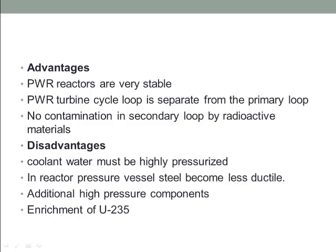Some disadvantages are also associated with the pressurized water reactor. The coolant water must be highly pressurized to remain liquid at high temperatures, requiring high-strength piping and heavy pressure vessels, which increases the construction cost. The higher pressure can also increase the consequences of a loss-of-coolant accident. Additionally, the reactor pressure vessel is manufactured from ductile steel, but neutron flux from the reactor causes the steel to become less ductile over time; eventually the ductility reaches a limit determined by applicable boiler and pressure vessel codes, requiring repair or replacement. Additional high-pressure components such as reactor coolant pumps, pressurizer, and steam generator are also needed, further increasing cost.